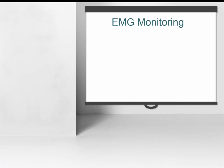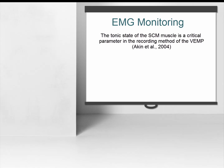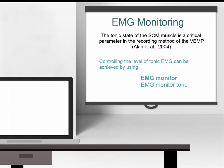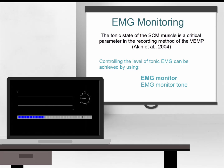In order to ensure that the CVEMP recordings are of good quality, the Interacoustics Eclipse houses two methods which the patients can use to monitor their muscle contraction, otherwise known as EMG. The first method provides a visual cue to the patient being tested. As they turn their head, the software will display the EMG contraction on a separate monitor screen.